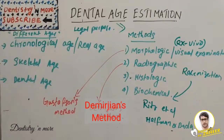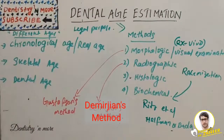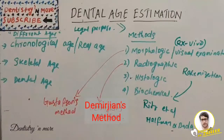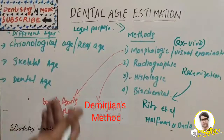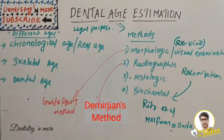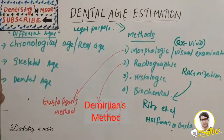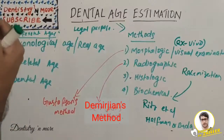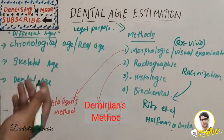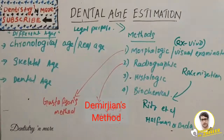Demirjian classified eight stages where we correlate the formation step or stage of tooth formation and convert the stage into a score, add all the teeth scores, and make the age estimation. This radiographic method is simple, non-invasive, and reproducible because we are taking radiographs, and it can be employed both on living and unknown dead people. Various radiographic images that can be used include IOPs, lateral oblique radiographs, cephalograms, OPGs, digital imaging, and advanced imaging technologies.